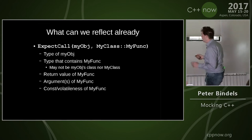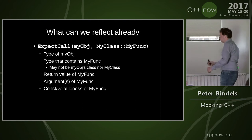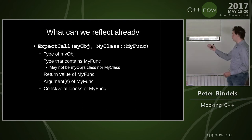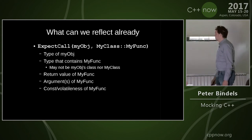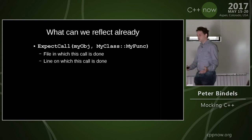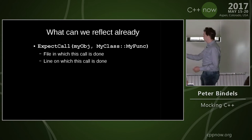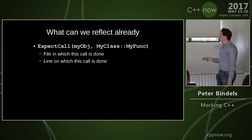Then we have EXPECT_CALL, and that gets me the type of the object, the type of the function, and the type of the class containing that function — which may not be either the class I'm specifying nor the type of the object I'm calling it on; it could be a third one. It gets me the return value, the arguments, and whether the function is const or volatile. That's quite a bit of information. EXPECT_CALL is a macro, so of course we get a file and a line — useful for telling the user which expectation was not satisfied.